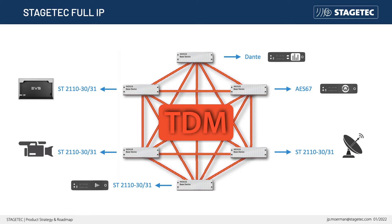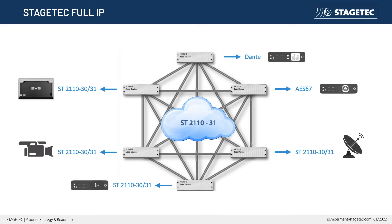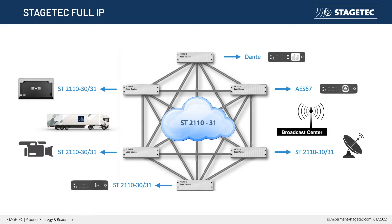Replacing TDM by TCP/IP layer 3 is done by using the ST2110-31 format, transporting the same audio and control data. As a result we can connect all Nexus nodes or base devices over a TCP/IP switch, also known as a data center, a broadcast center, or the central switch of an OB van.